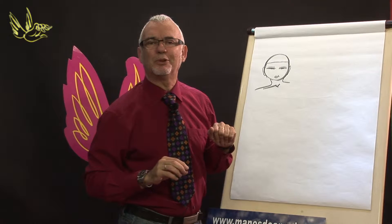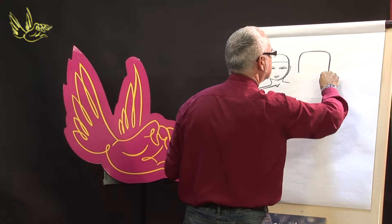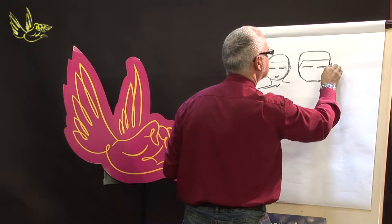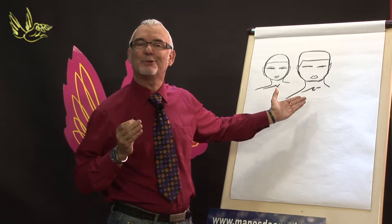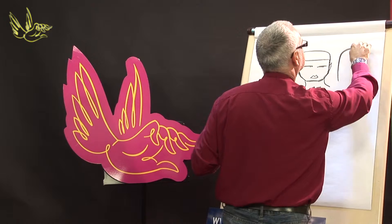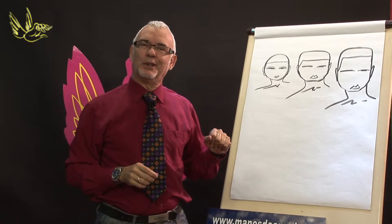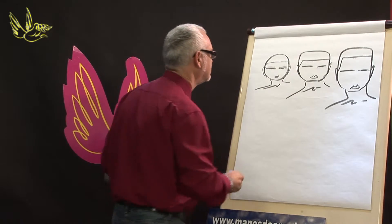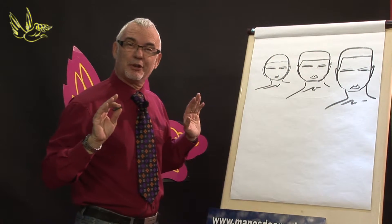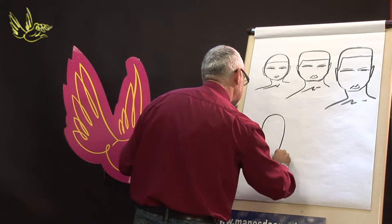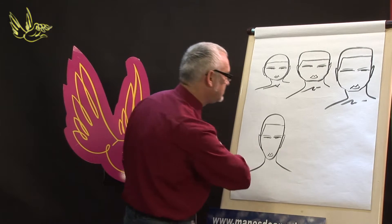Here we have the so-called round shape — round face or lunar. Here I present the square face. Rectangular face — let's draw the eyebrows. Now let's move on to the elongated face.